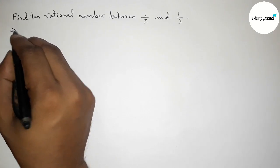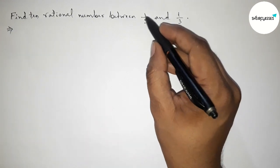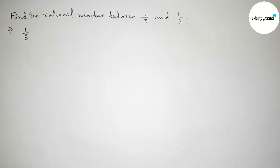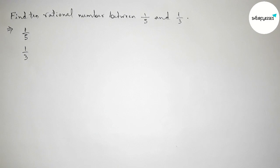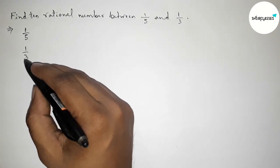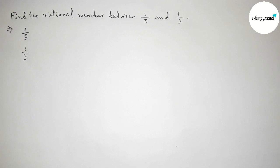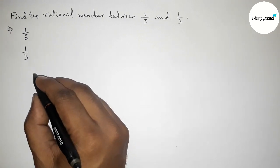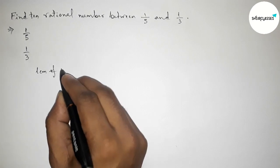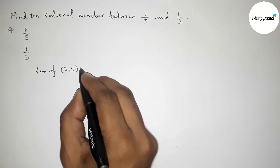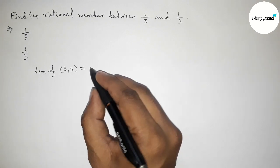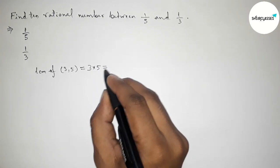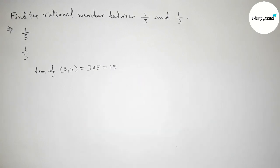First, let us solve this problem. The first given rational number is 1/5 and the second one is 1/3. Both the denominators are not equal, so we have to make them the same. Finding the LCM of 3 and 5 — since 3 and 5 are prime to each other, the LCM will be their product: 3 × 5 = 15.